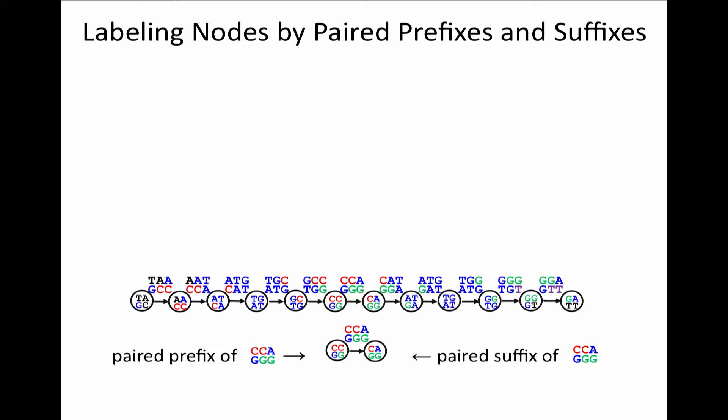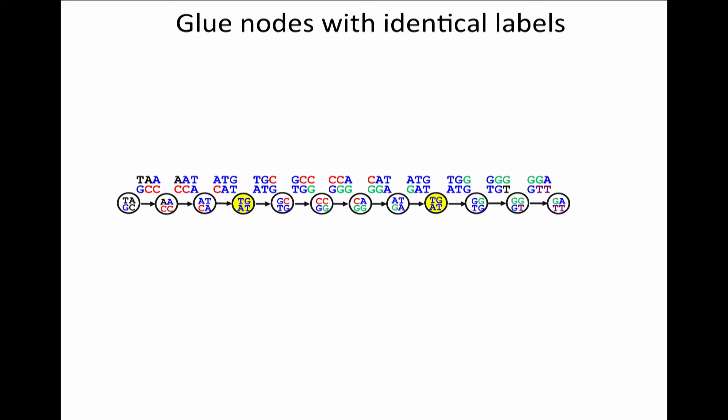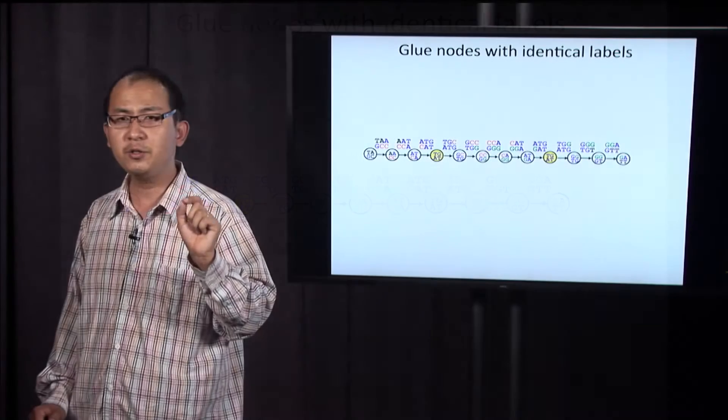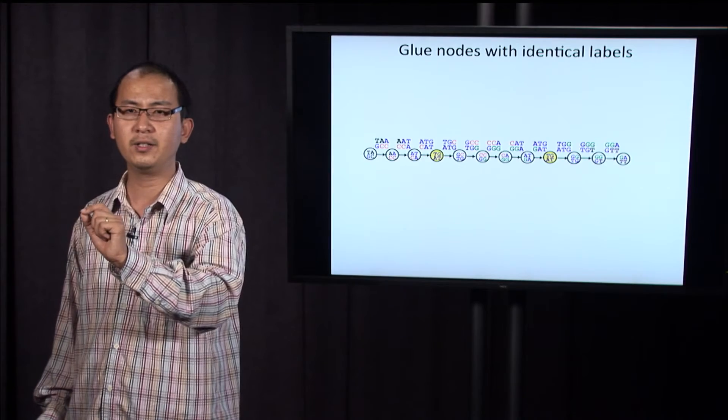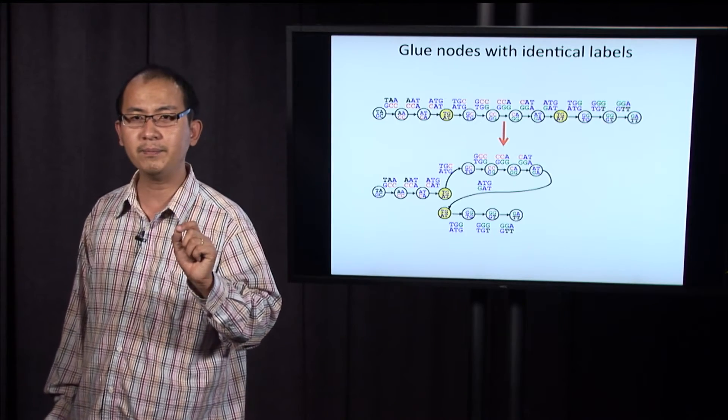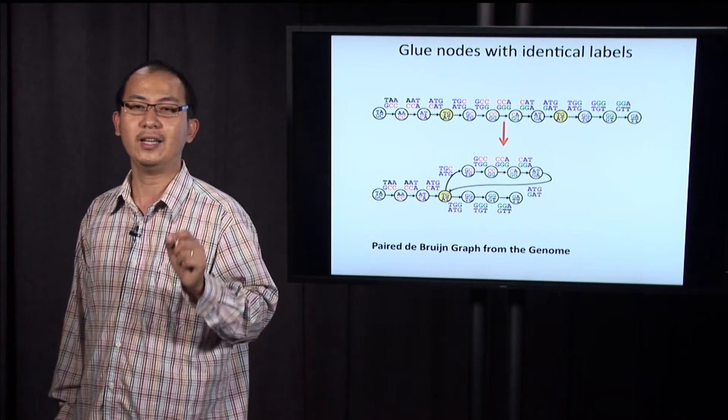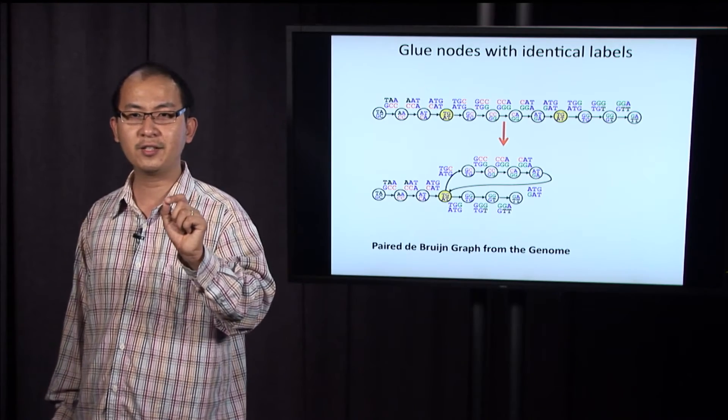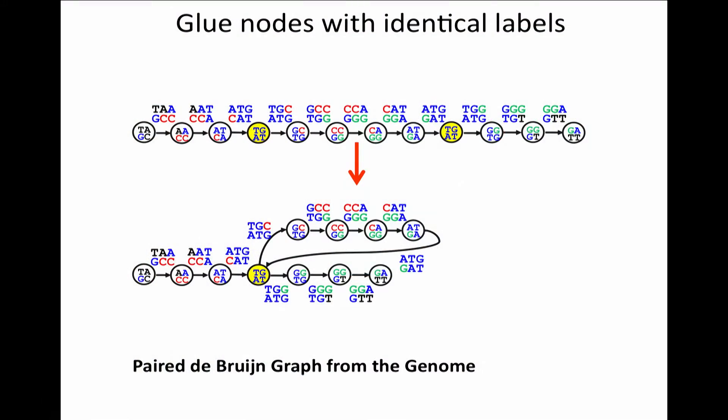But allow me to do one crazy operation with this genome path. Let me glue nodes with identical labels together. In this slide, we have two nodes with identical label TG80. We glue them, and this graph is called the paired de Bruijn graph from the genome.